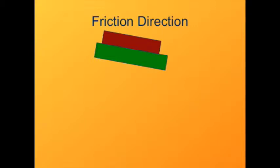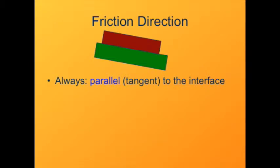When we're looking at the force of friction between two objects, remember first that friction is always tangent to the interface between the objects. If we have a force that's not fully parallel to the interface, we'll call the parallel component the friction and the normal component the normal force.